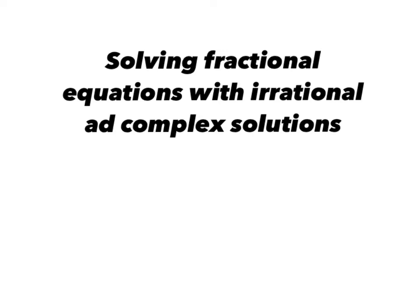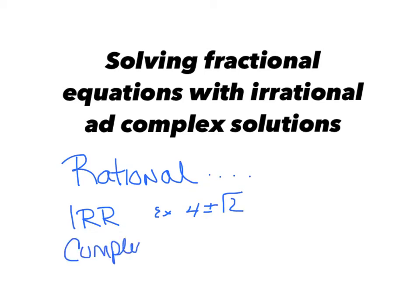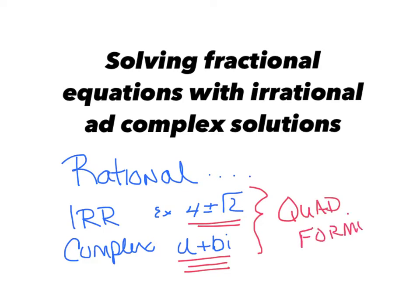Welcome back. We've got another great night of solving fractional equations, but this time we're going to have irrational or complex solutions. Remember, rational means it came out to be a nice number you've been familiar with. Irrational solutions are most likely going to have some sort of radical in them, for example, 4 plus or minus radical 2. Complex solutions are going to end up in that A plus B-I form. Any time you see radical or A plus B-I form, that's another indication that you're going to need to use quadratic formula.